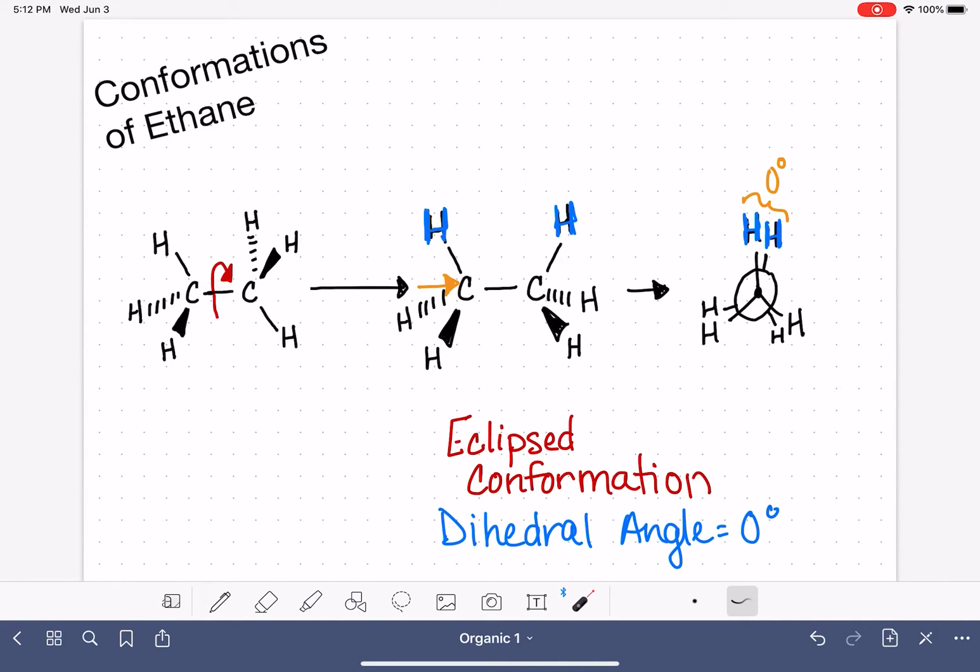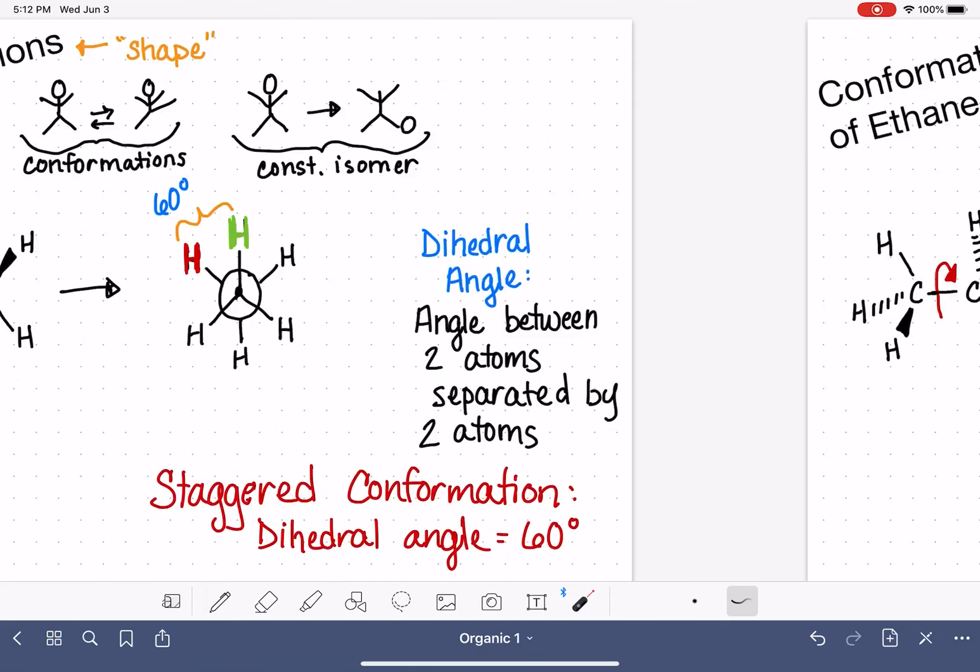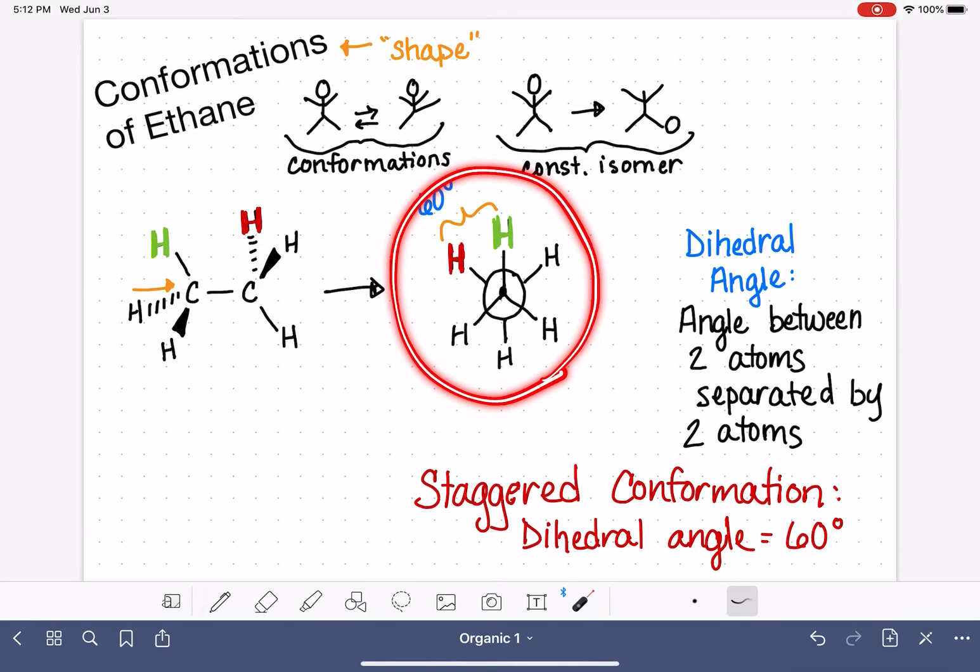The last thing that we're going to talk about with regards to the conformation of ethane is the energy associated with these two different shapes that ethane can take. As the ethane molecule is freely rotating around its carbon-carbon bond, sometimes it takes this shape right here, and sometimes it takes this shape right here.